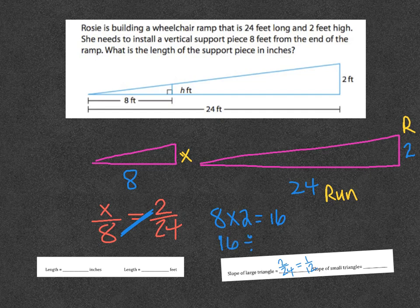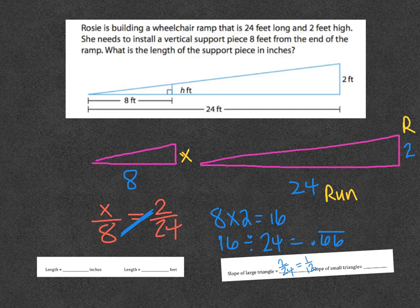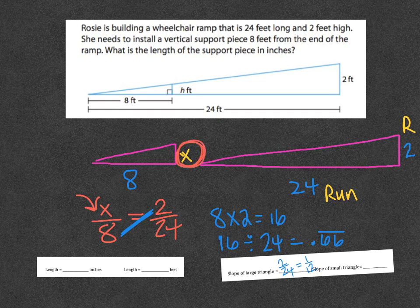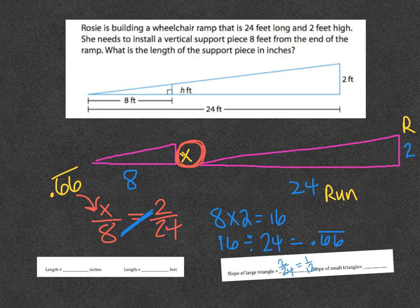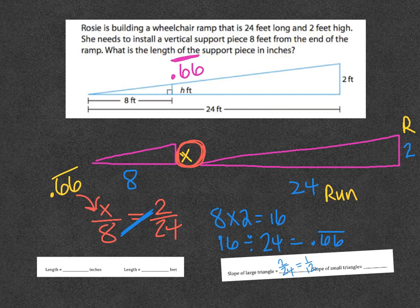16 divided by 24 is 0.66 repeating. The measurement now that was supposed to be here for the height of that support beam is 0.66 repeating. Once I put that in, let's say if I was to put this right here, 0.66 repeating, now I know the rise - the rise is 0.66 repeating, and the run is 8.